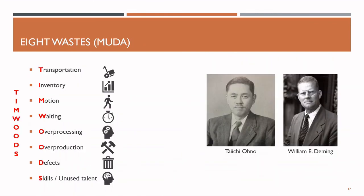These were the eight wastes of muda: transportation, inventory, motion, waiting, over-processing, over-production, defects, and skills or unused talent. In the next lecture we will learn about the differences of push and pull production.